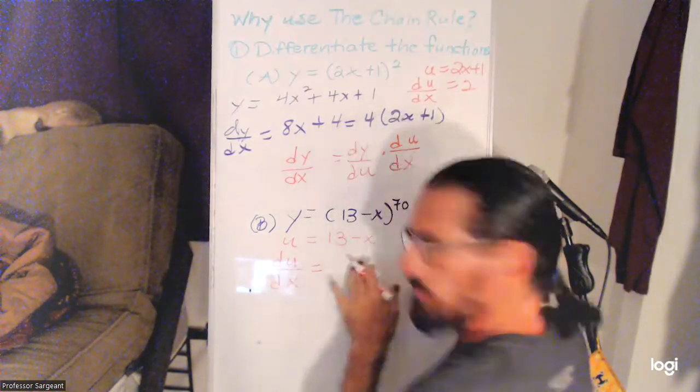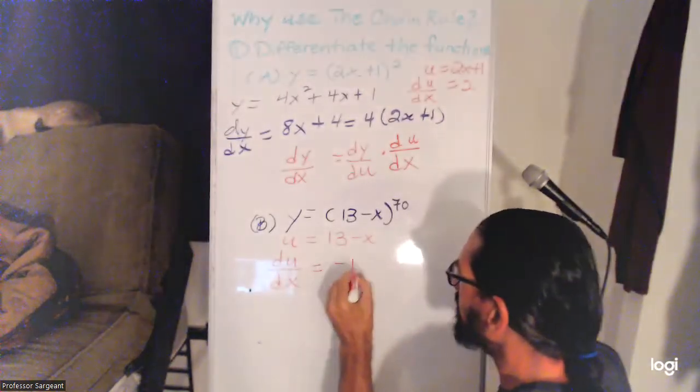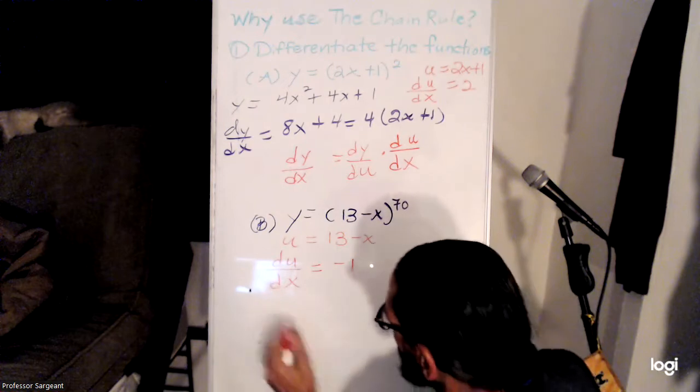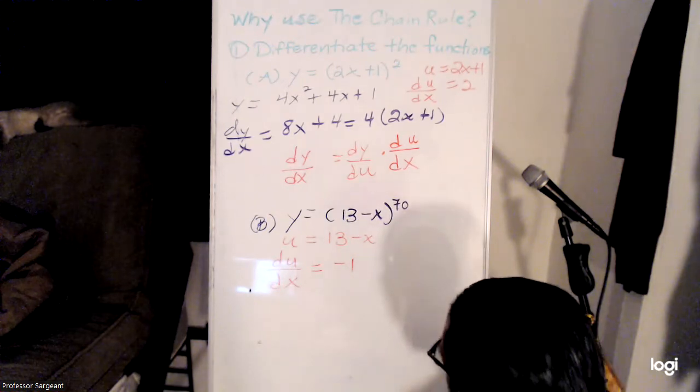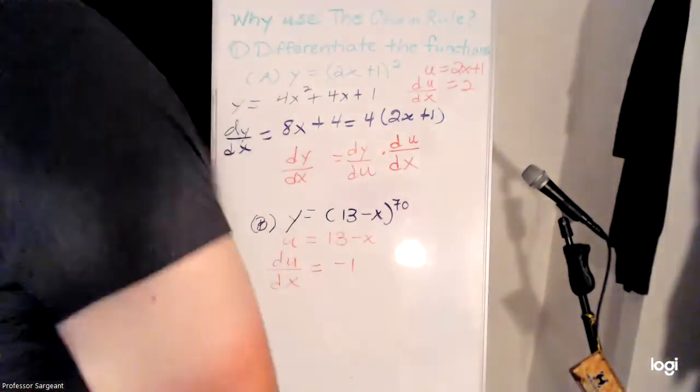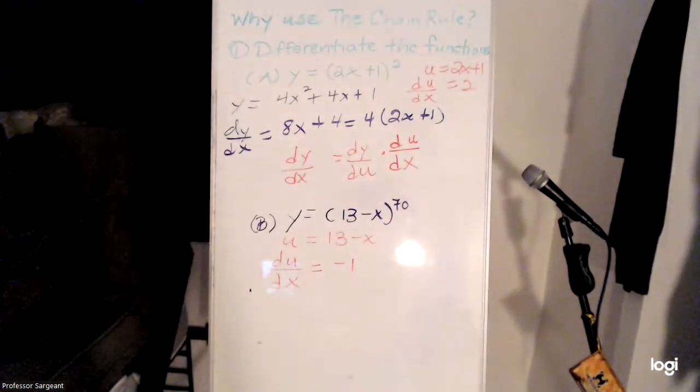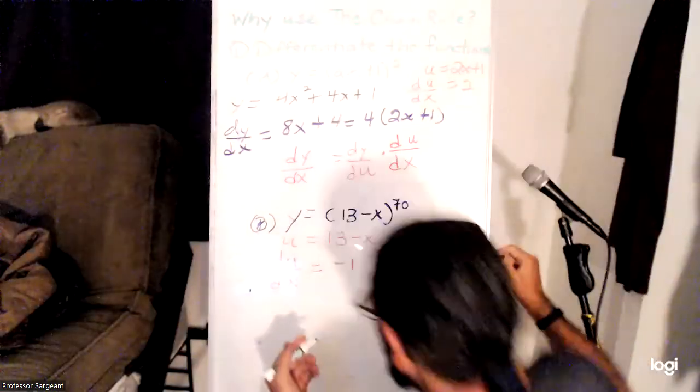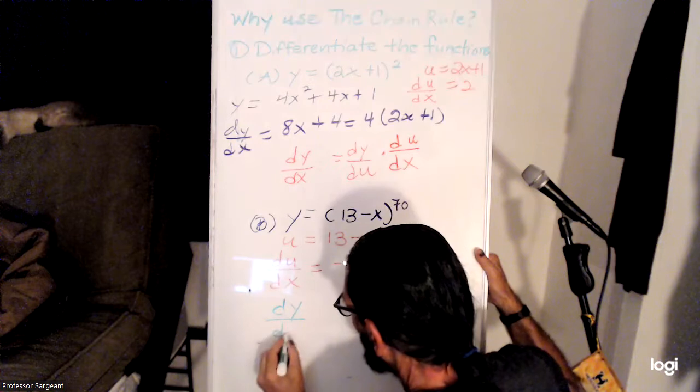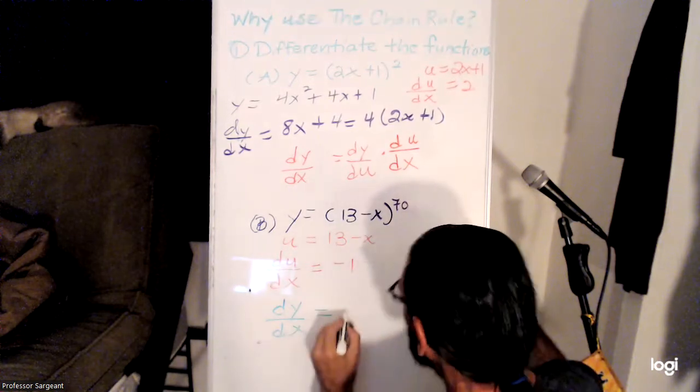And then if we take the derivative of that whole thing raised to the 70th power, then we're going to have 70 brought out in front.